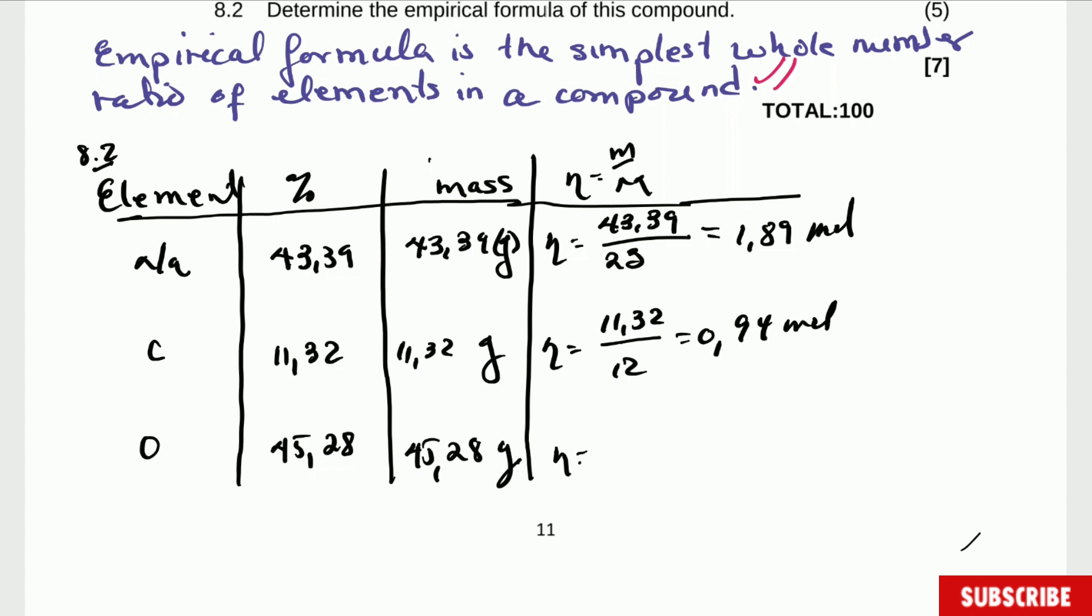And the last one is for oxygen, number of moles is equal to 45.28 divided by molar mass which is 16 is 2.83. So we are done with the number of moles.